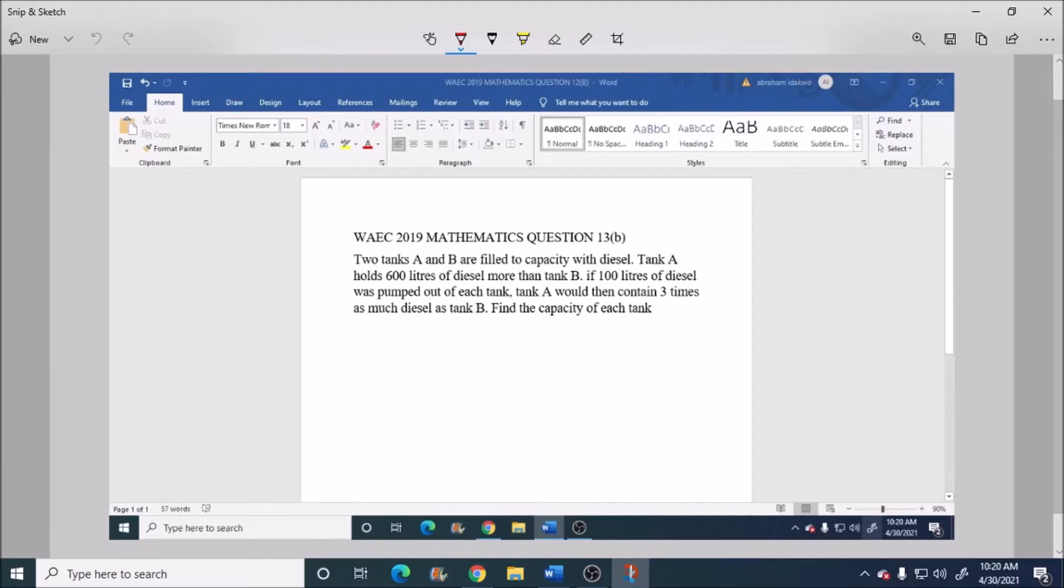Two tanks A and B are filled to capacity with diesel. Tank A holds 600 liters of diesel more than tank B. If 100 liters of diesel was pumped out of each tank, tank A would then contain three times as much diesel as tank B. Find the capacity of each tank.